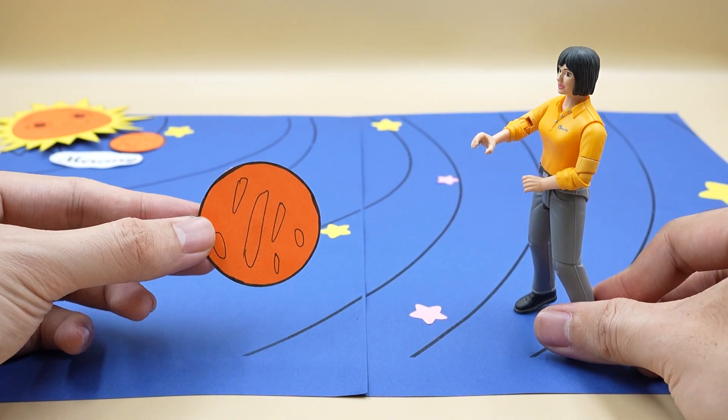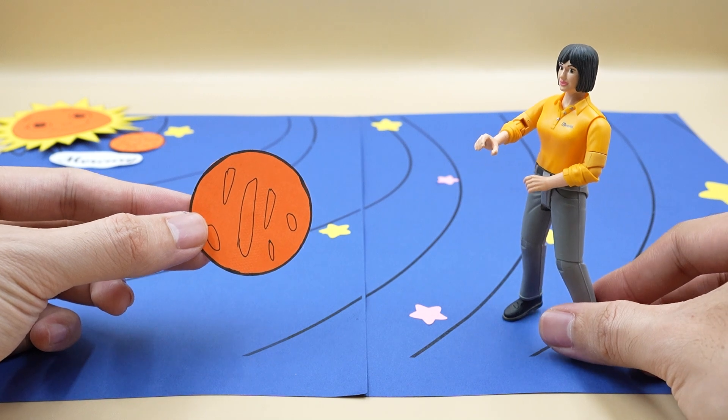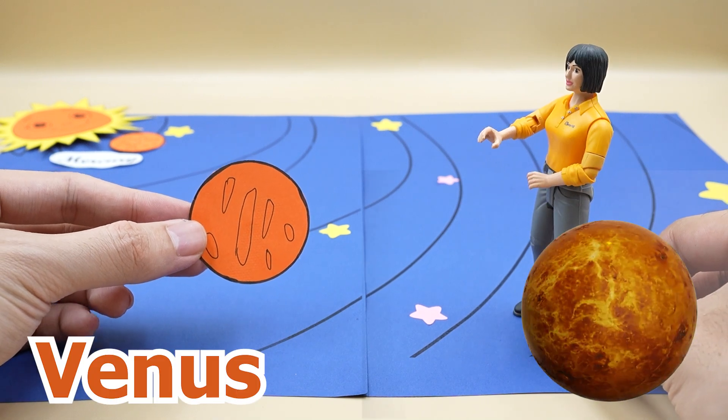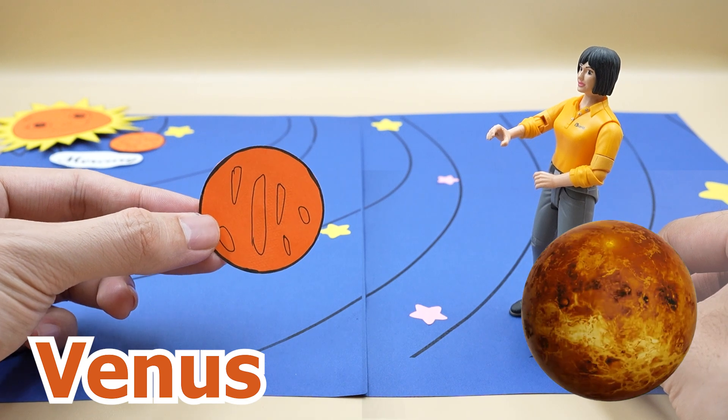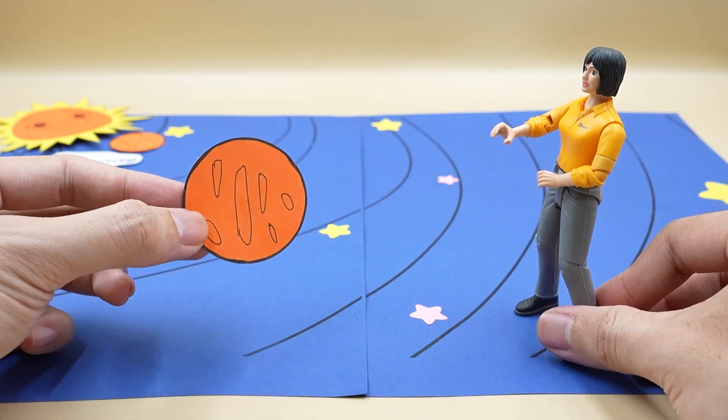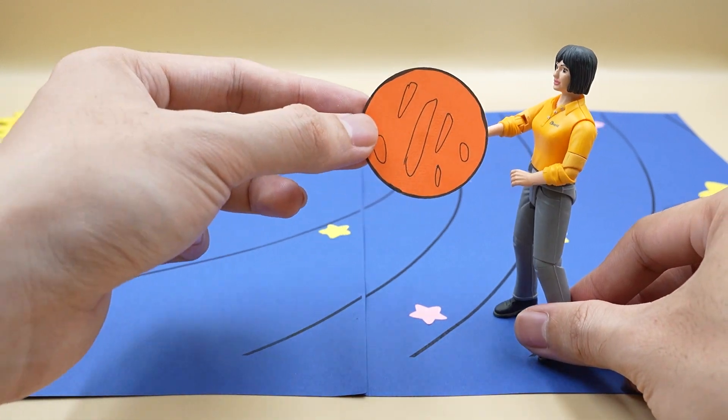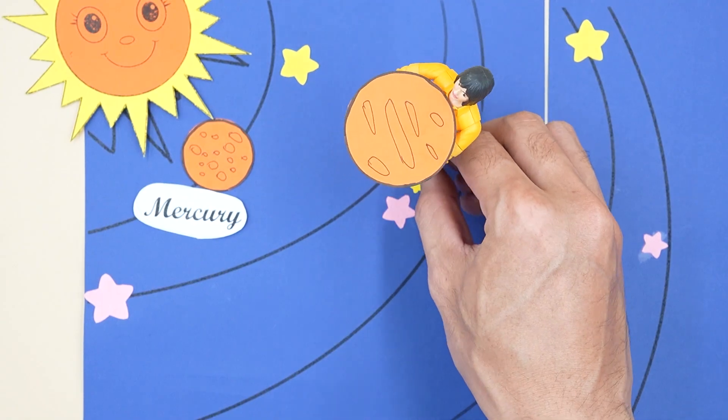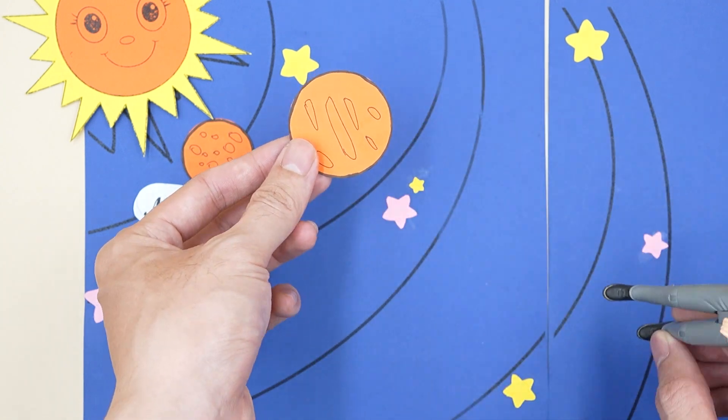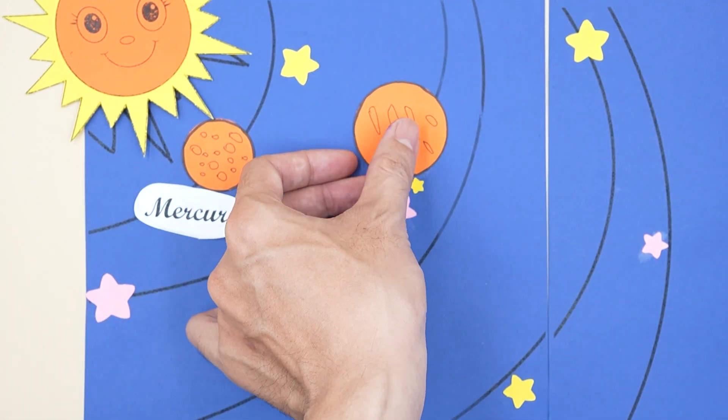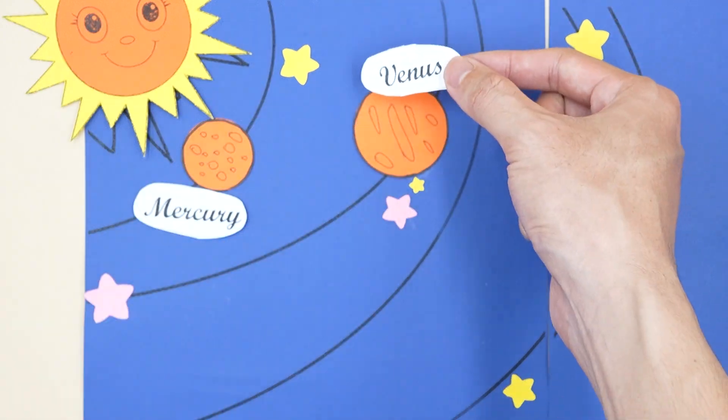The second star, which star is this? Oh, this is Venus. This is the second star closest to the sun. Although it is not the closest star to the sun, it is the hottest star in the solar system. I will help you put it in the solar system image. Let me help you take it down. I would place Venus behind Mercury. I will give this star the word Venus.